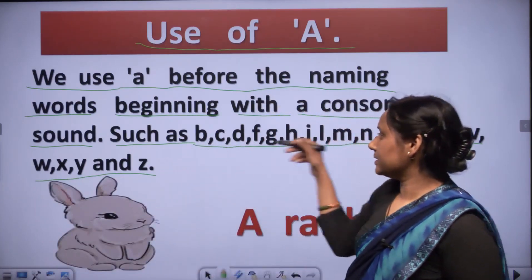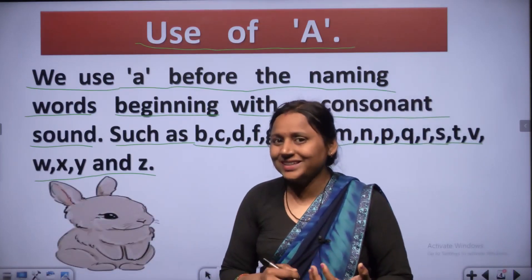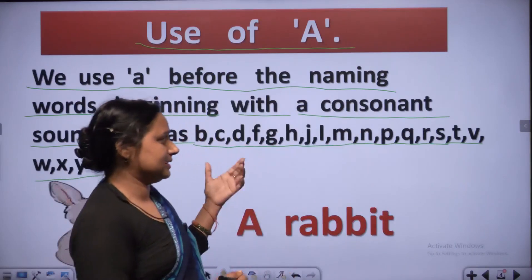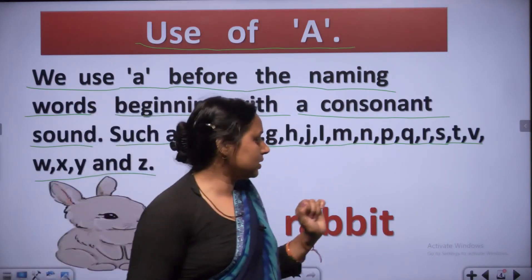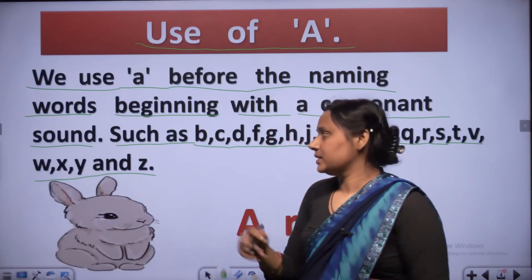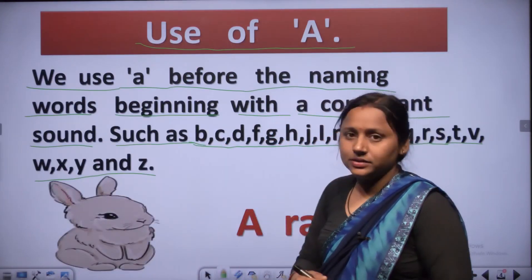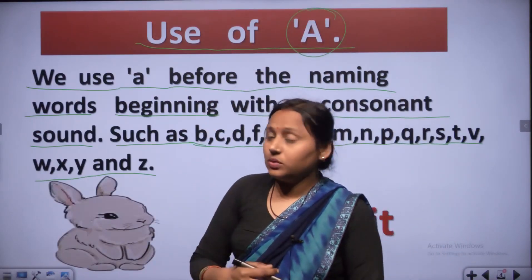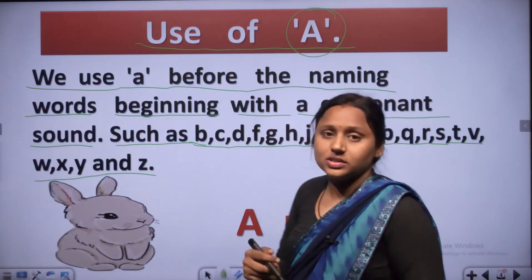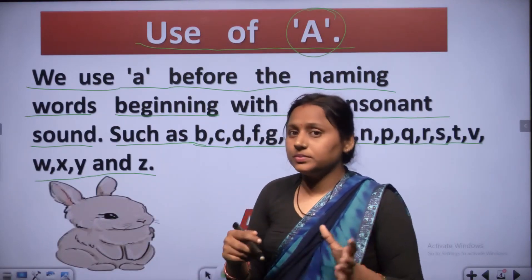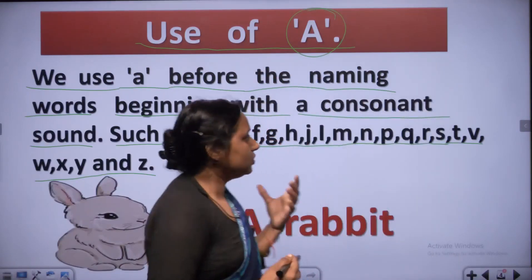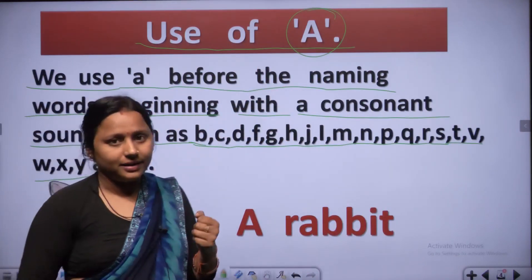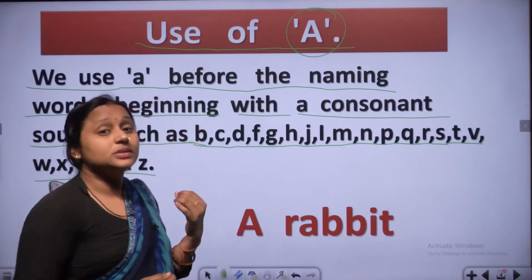These 21 letters are consonants. Words starting with a consonant sound use A. Such as the word 'boy' - we use A. And 'cat' - A cat. For example: R, A, double B, I, T - rabbit. R is consonant, so we use A. A rabbit.